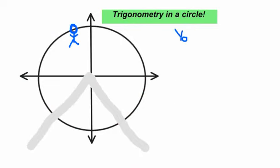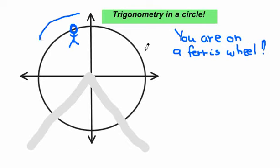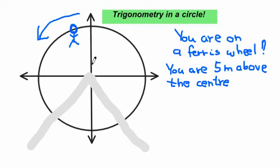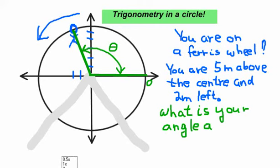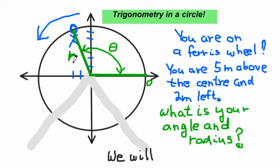We'll also learn trigonometry in the context of going around a circle. Say you're on a ferris wheel at the Red River Ex — you're five meters above and two meters to the left of the center. We can calculate your angle and your distance. There's really a triangle inside that circle, so you're able to calculate things about circles by studying triangles.